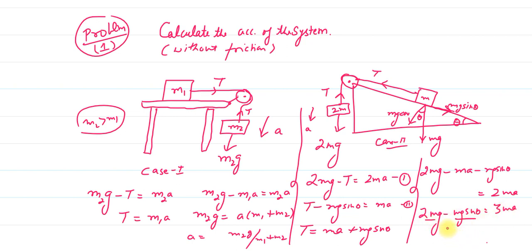Taking g common, the answer will be a equals g times (2 minus sin theta) divided by 3. So the acceleration is g(2 - sin θ)/3. This is the acceleration for the second system. Thank you.